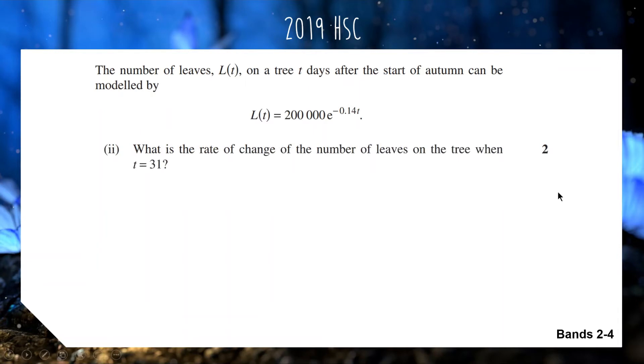For part 2, what is the rate of change of the number of leaves when t equals 31? When you have a function describing the quantity of something and you want to find the rate of change, you need to find the derivative of that function. So we'll find L dash t, the derivative of L. To differentiate this exponential term, we leave it as is and multiply by the derivative of the power. Our power is negative 0.14t, so the derivative is negative 0.14.